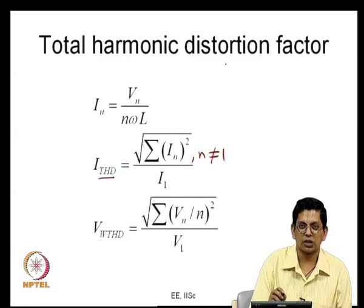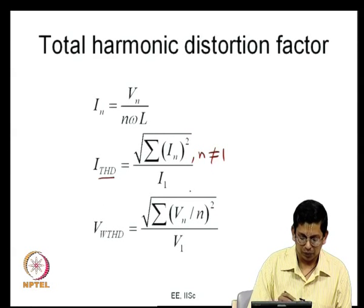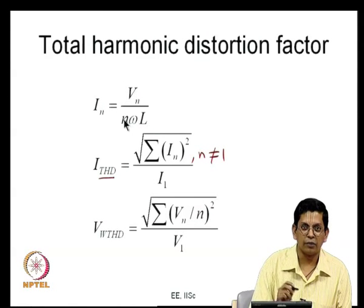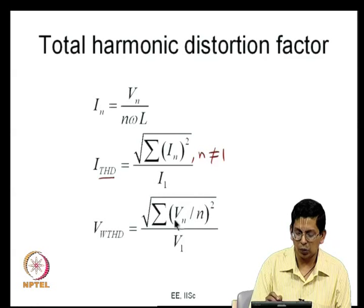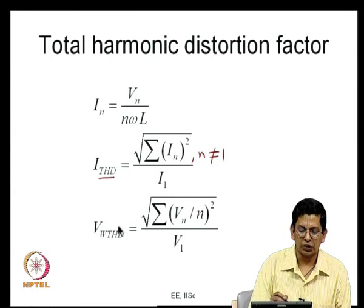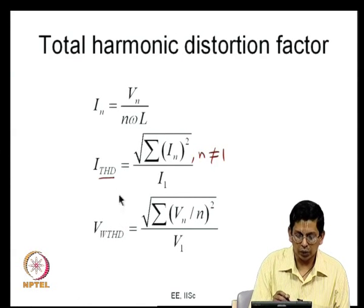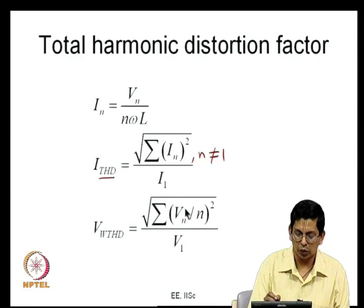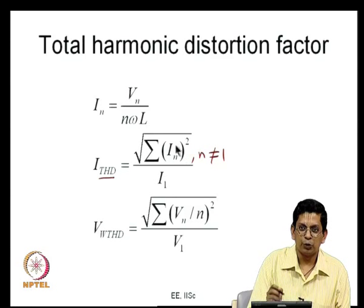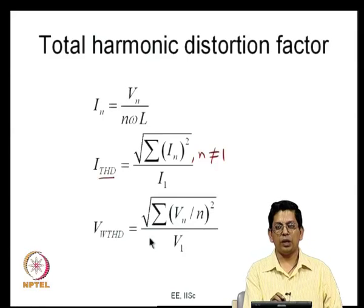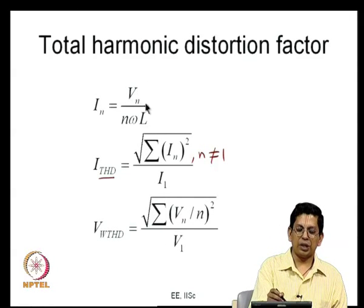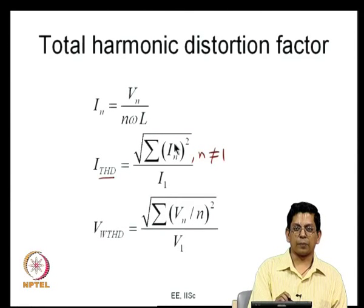The total harmonic distortion (THD) of the current waveform is the RMS sum of all harmonic currents divided by the fundamental current I1. Since In is proportional to Vn/n, the sum of (Vn/n)² is a measure of the sum of In², and dividing by V1 gives the weighted total harmonic distortion factor of the voltage waveform, which equals the current THD. To compute weighted THD, individual harmonic voltages must be calculated from the harmonic spectrum.